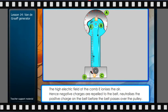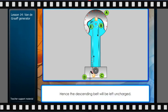Hence, negative charges are repelled to the belt, neutralizing the positive charge on the belt before the belt passes over the pulley. Hence, the descending belt will be left uncharged.